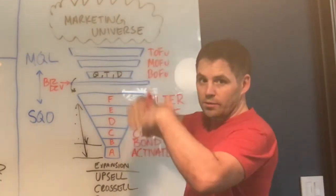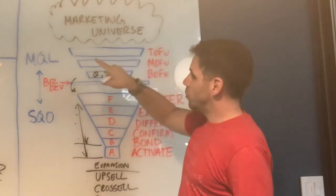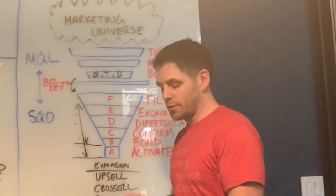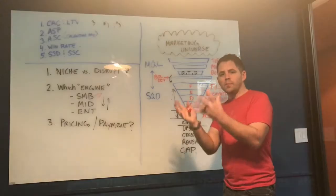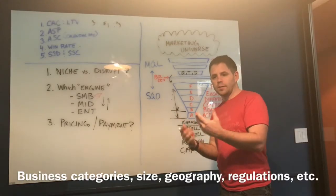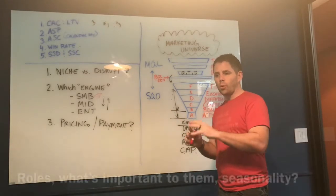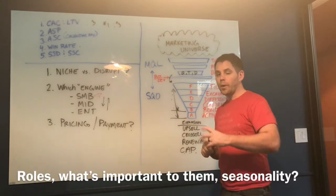you have your marketing universe. This is self-explanatory. From there, you want to try to distill out who your target buyers are. So your target account profiles, more around the business topography and attributes. And then who within that role do you want to target? These are your buyer personas.